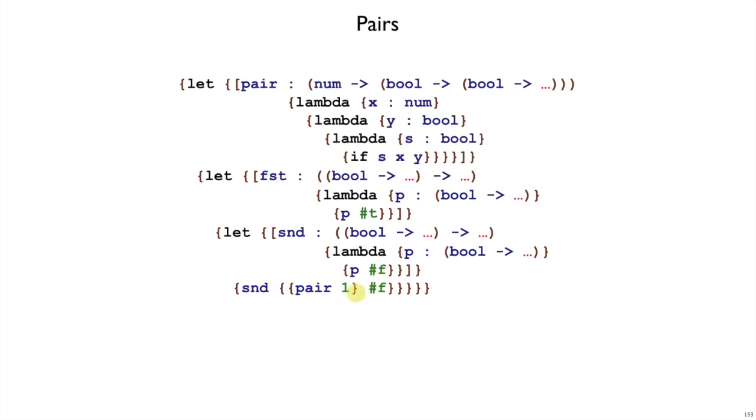What if I have a pair that contains just a number and a boolean? Instead of both numbers and both booleans, I have different things here. So now my pair function needs to take a number and then a boolean and then return a representation of the pair that wants a selector and then what does it return? Well sometimes it returns a number and sometimes it returns a boolean.